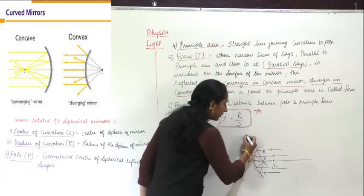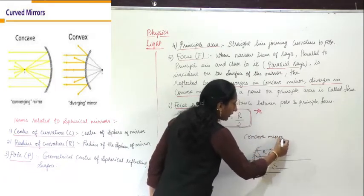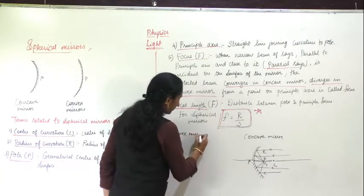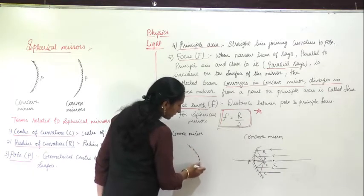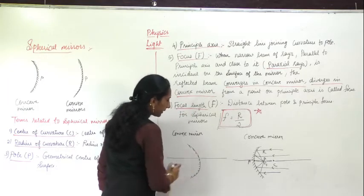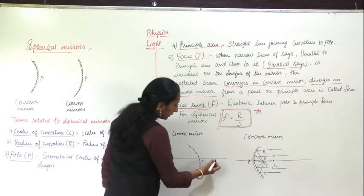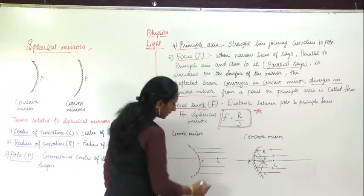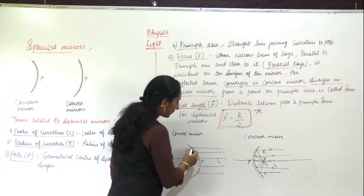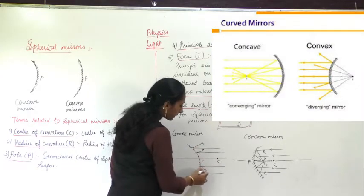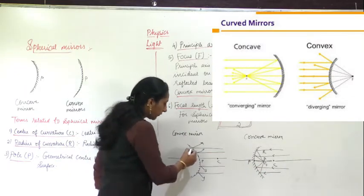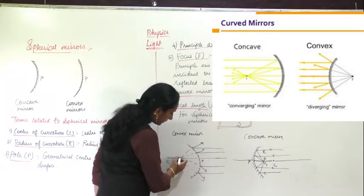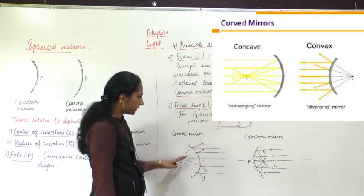For convex mirror it is opposite. In convex mirror the inner part is coated and the outer part is the reflecting surface. The center of curvature is on the other side. When light rays fall on the surface and reflect back, if you extend those reflected rays, they appear to diverge from a point behind the mirror — that point acts as the focus for a convex mirror.